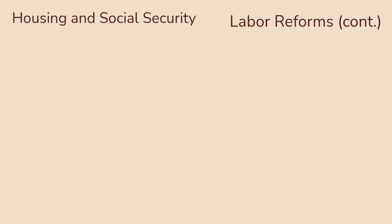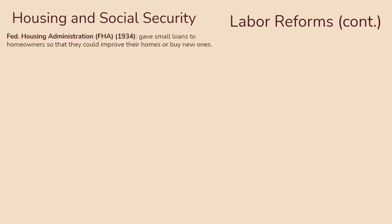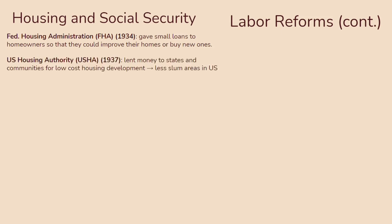Let's talk about housing and social security, as well as a couple other labor reforms. In terms of housing, you should know about the Federal Housing Administration — the FHA — in 1934, which gave small loans to homeowners so they could improve their homes or buy new ones, trying to stimulate economic growth by getting people to buy things. You should also know about the U.S. Housing Authority — the USHA — formed in 1937, which lent money to states and communities for low-cost housing development, trying to reduce the number of slum areas also known as Hoovervilles, and making sure everyone had a safe, hygienic place to live.